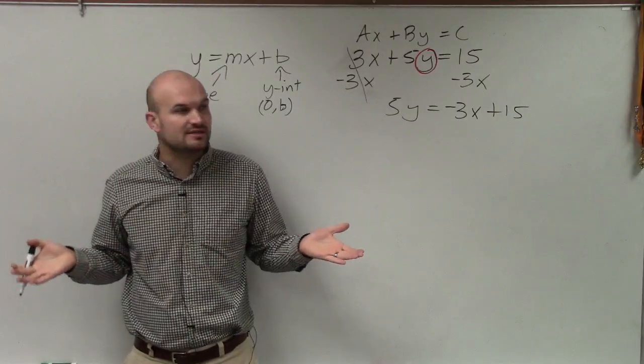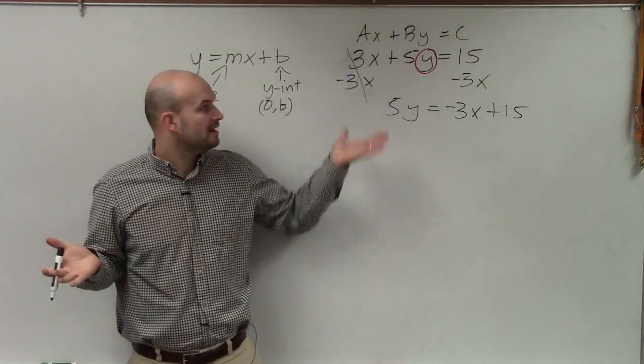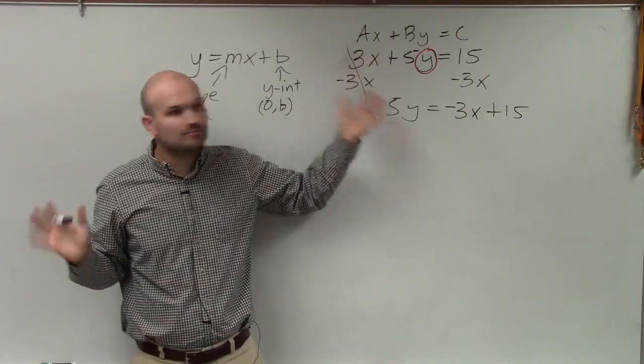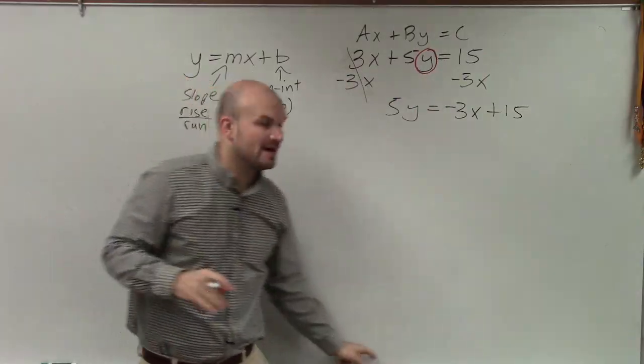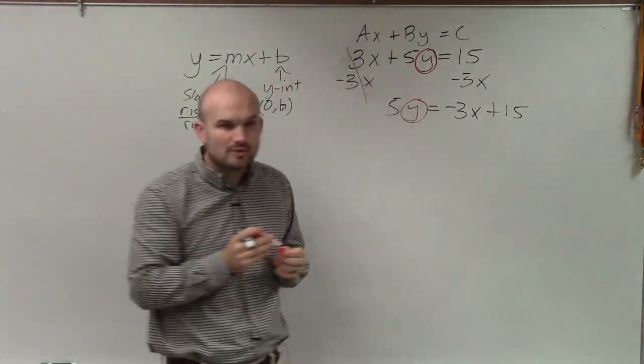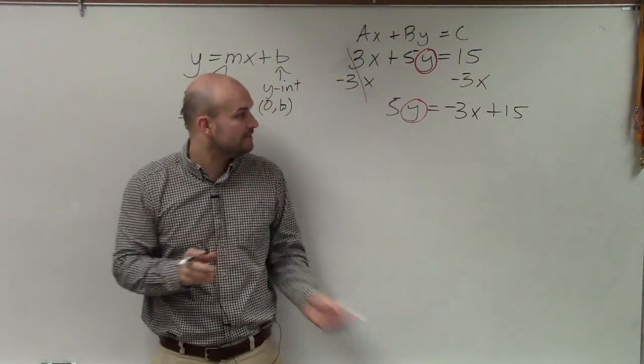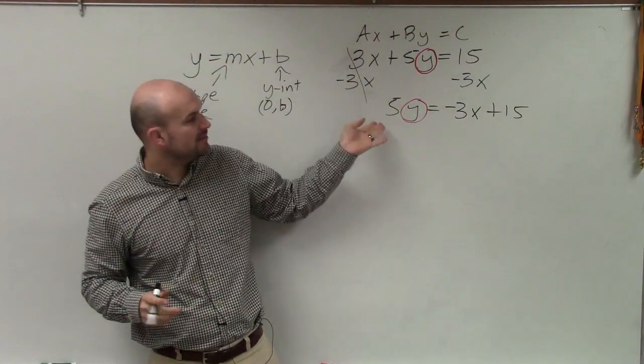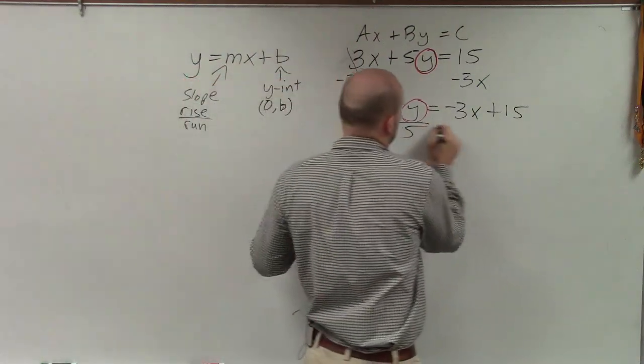Notice how I didn't do anything with the y. I didn't put the y on anything. I didn't move the y. I put a red circle around it, because that was pinning it. I'm not doing anything to the y. I'm just undoing everything that's happening to it. Now you can see my y is being multiplied by 5. So I undo that by dividing by 5.